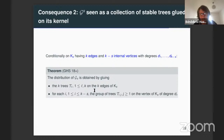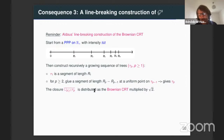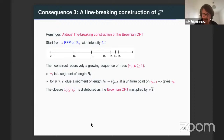This is one first description of this limiting graph G_S. We have a second one, which is a line-breaking construction. Remember the line-breaking construction of the Brownian tree — we start from a Poisson point process on R+ and glue segments from this Poisson point process. For the stable graph, it will be a bit more complicated, but I hope you will follow. We want to start from a sequence of segments and glue them in order to obtain the graph G_S.